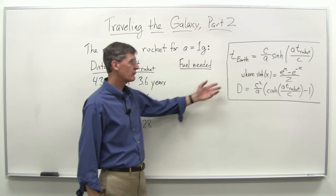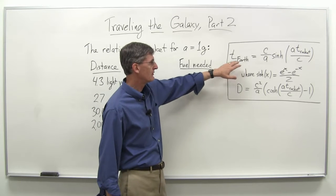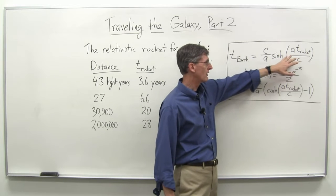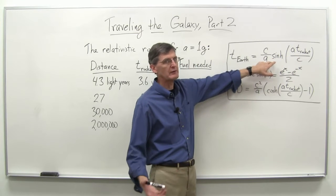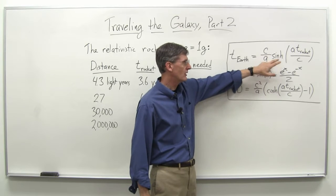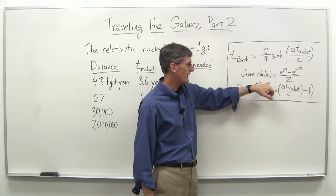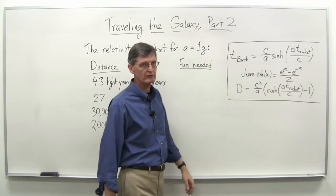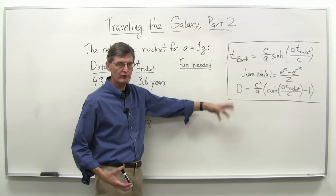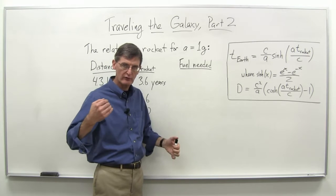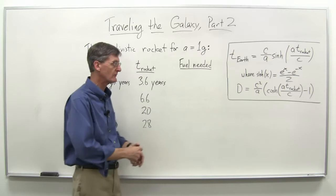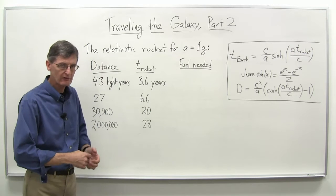We're doing a relativistic rocket problem for an acceleration of 1g, 1g being the acceleration due to gravity on Earth, 9.8 meters per second squared, or about 10 meters per second squared. You get equations like this relating the time passing on Earth versus the time passing on the rocket, where you have hyperbolic trigonometric functions. You have another equation for the distance traveled and for the velocity, because the velocity is changing.